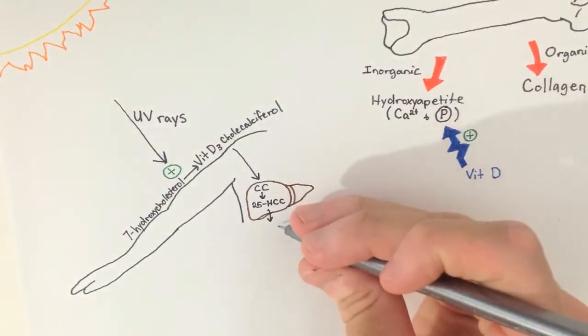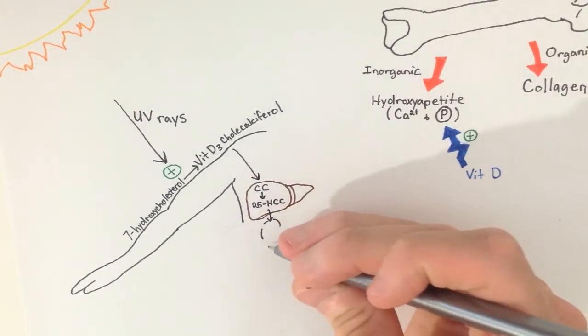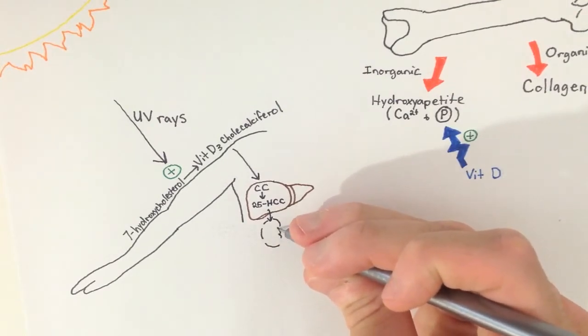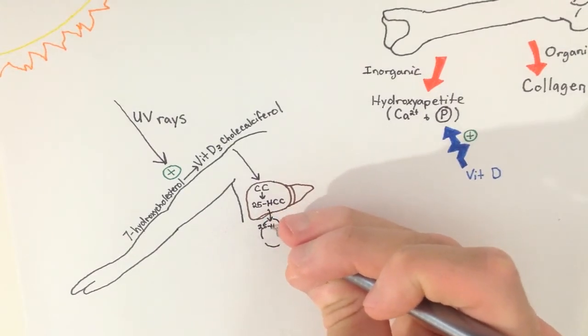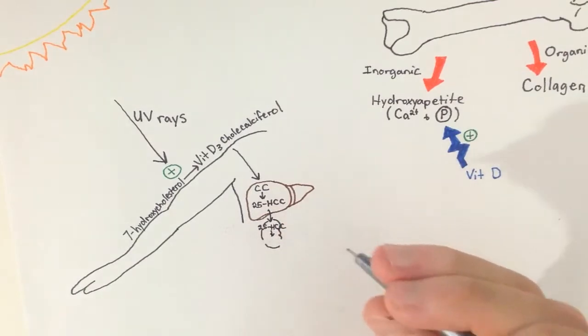When it needs to be used, the 25-HCC is transported to the kidneys where 1-alpha-hydroxylase activates it to form 1,25-dihydroxycholecalciferol, also known as calcitriol. This guy is the playmaker.